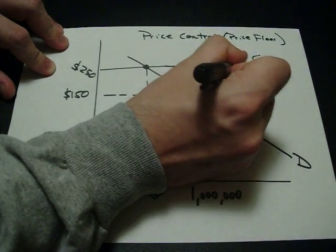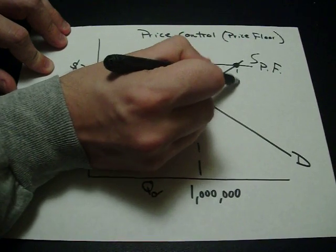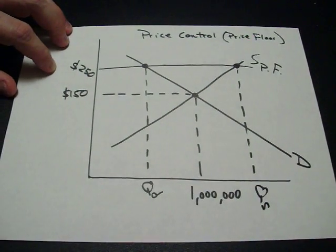Next thing that it hits is the supply curve. That's where that price floor hits the supply curve. Trace down from the supply curve, and clearly this shows quantity supplied.